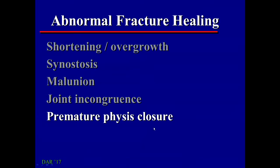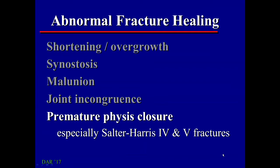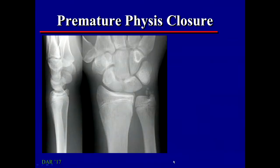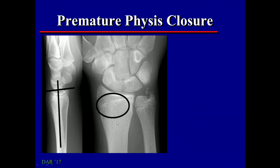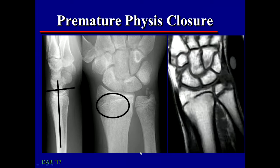Premature closure of the physis is a problem that can occur in children's fractures, especially problematic in Salter-Harris 4 and 5 fractures, and it can result in a growth disturbance. Here we have a child with a distal radius fracture that's healed with angulation of the distal articular surface — because somewhere in here we have premature fusion of the physis. This is easiest to recognize on CT or MRI. On MRI, we can see that across the open physis, there is new bone formation that's occurred.